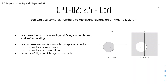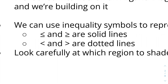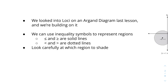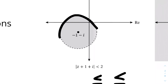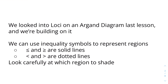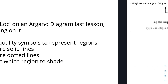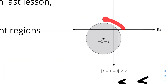We can use inequality symbols to represent regions. We have the less than or equal to sign and the greater than or equal to sign — they represent the regions and we use solid lines to represent them. For example, the less than symbol with no 'or equal to' uses a dotted line, whereas less than or equal to uses a solid line.